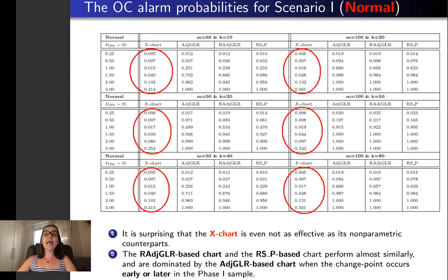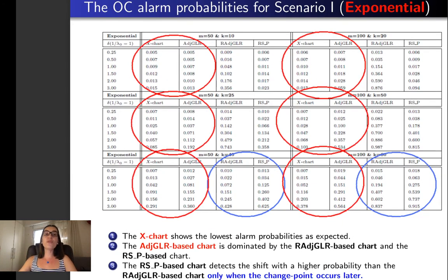Under exponential distribution we observe that the X-chart and the adjusted GLR show the lowest alarm probabilities whereas RSP outperforms the r-adjusted GLR only when the change point occurs later in the sample.